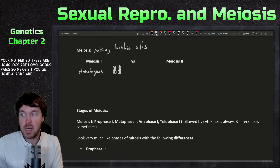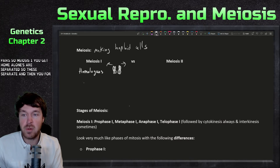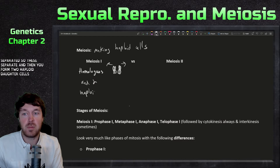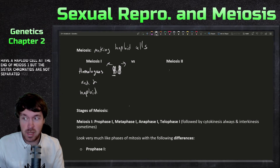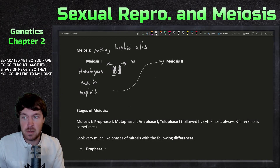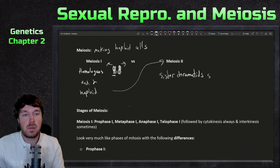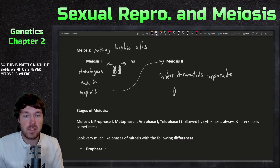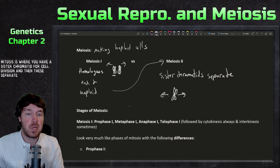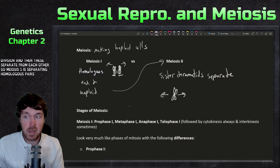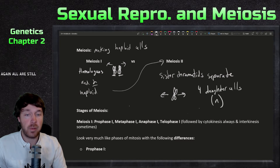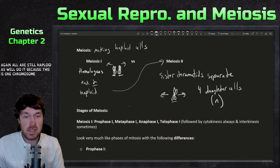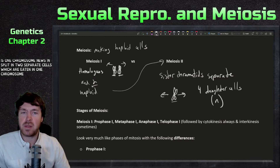In meiosis one, homologues are separated and you form two haploid daughter cells. So you already have a haploid cell at the end of meiosis one, but the sister chromatids are not separated yet — you have to go through another stage. In meiosis two, sister chromatids separate — this is pretty much the same as mitosis. So meiosis one separates homologous pairs, and meiosis two separates sister chromatids. After this we have four daughter cells, all still haploid.